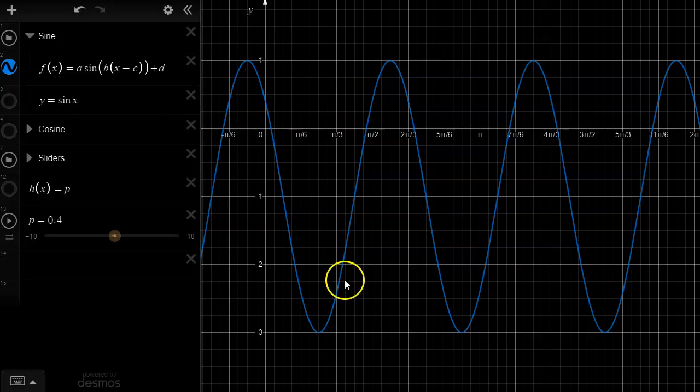Here I have a graph in blue that is some transformation of the function y equals sine x. What we want to do is to figure out the a, b, c, and d values for this particular graph. Once we have those we pop them into this equation and we're done.